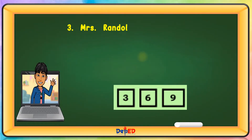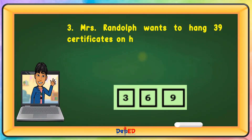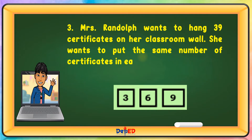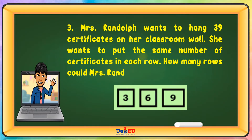Mrs. Randolph wants to hang 39 certificates on her classroom wall. She wants to put the same number of certificates in each row. How many rows could Mrs. Randolph make? The answer is 3.